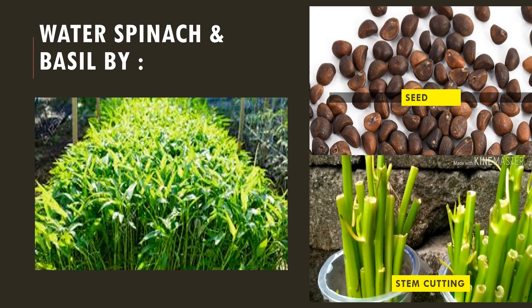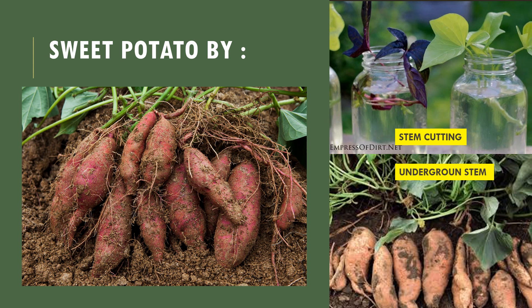As you can see from this slide, there are two types of plants that can reproduce more than one way. Water spinach and basil can both be reproduced through seed and also cutting stem. Sweet potato can be reproduced through cutting stem and also underground stem, as you can see from this picture.